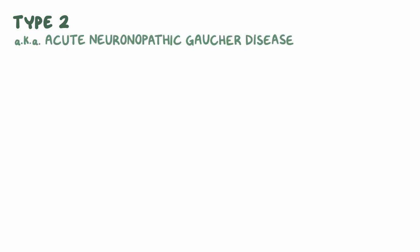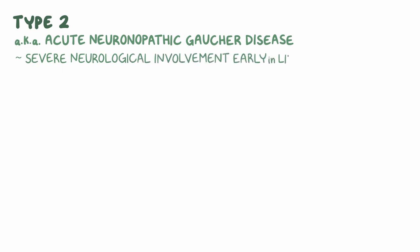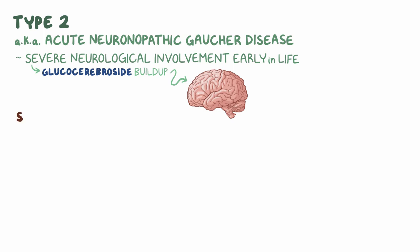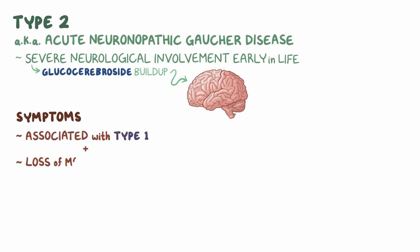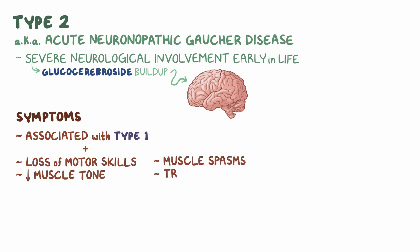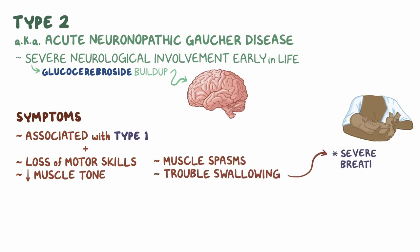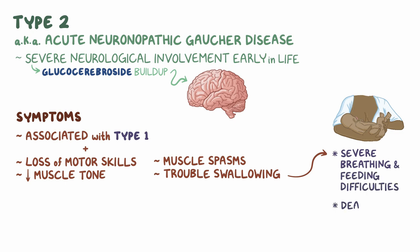Type 2, also called acute neuronopathic Gaucher disease, is characterized by severe neurological involvement early in life due to glucocerebroside buildup in the brain. In addition to symptoms associated with type 1, there is also a loss of motor skills, decreased muscle tone, muscle spasms, and trouble swallowing. This can progress to severe breathing and feeding difficulties and death within the first few years of life.